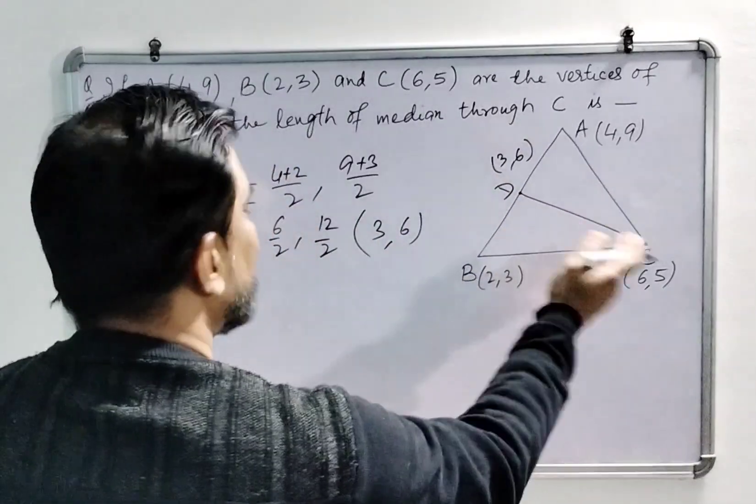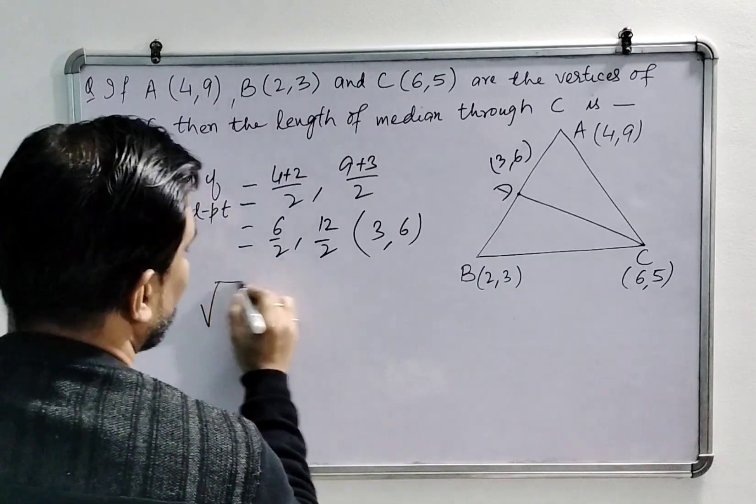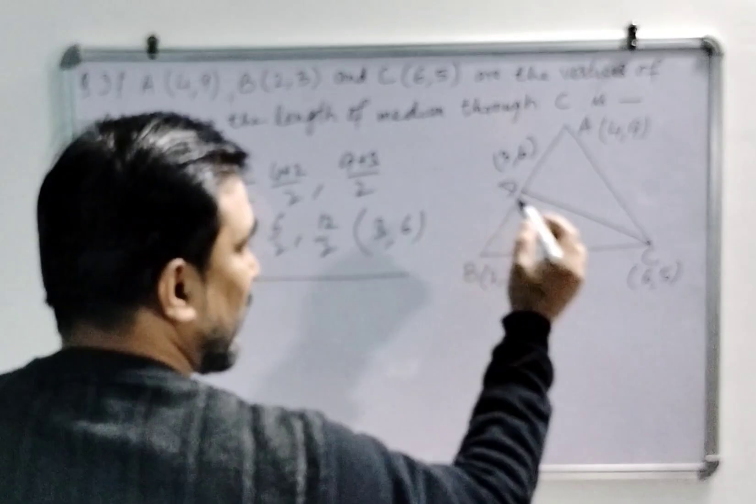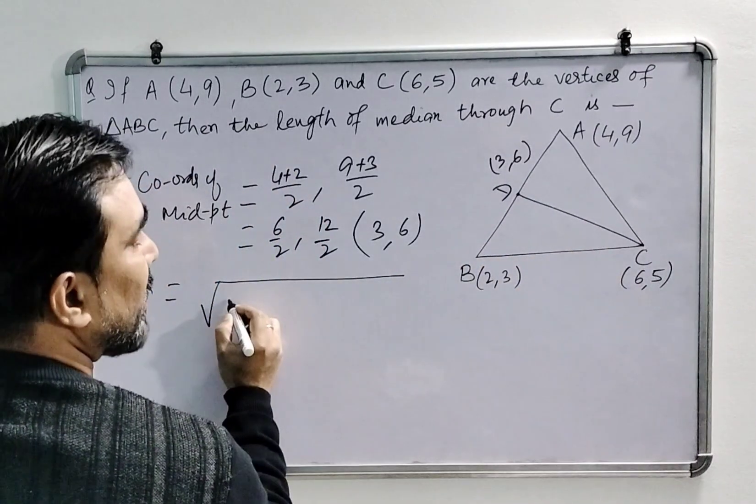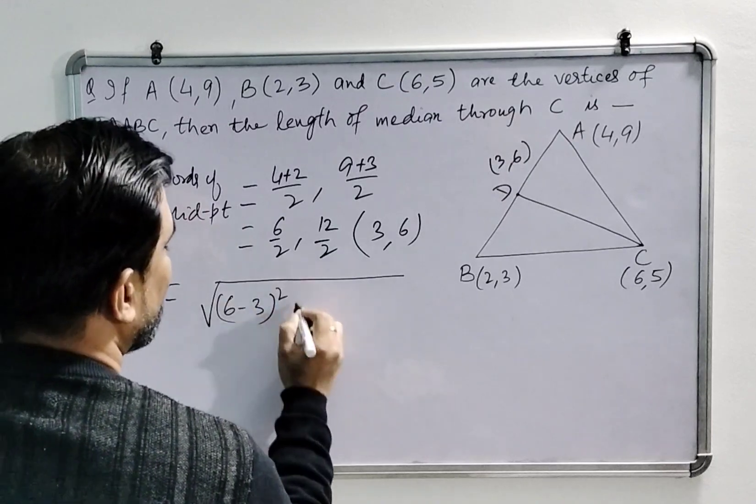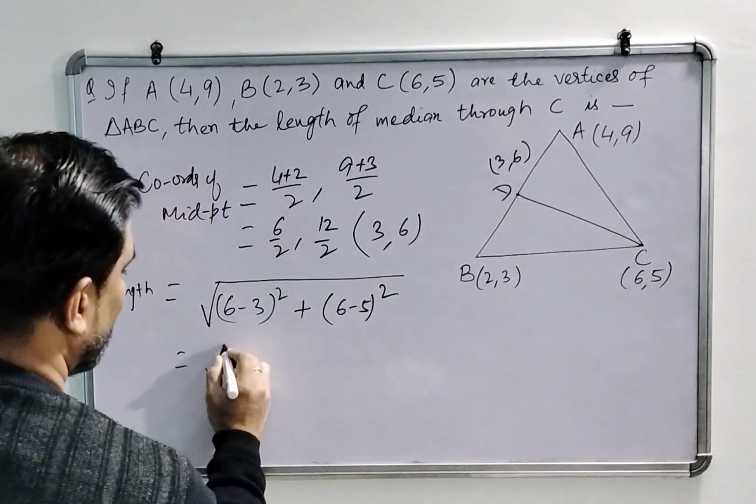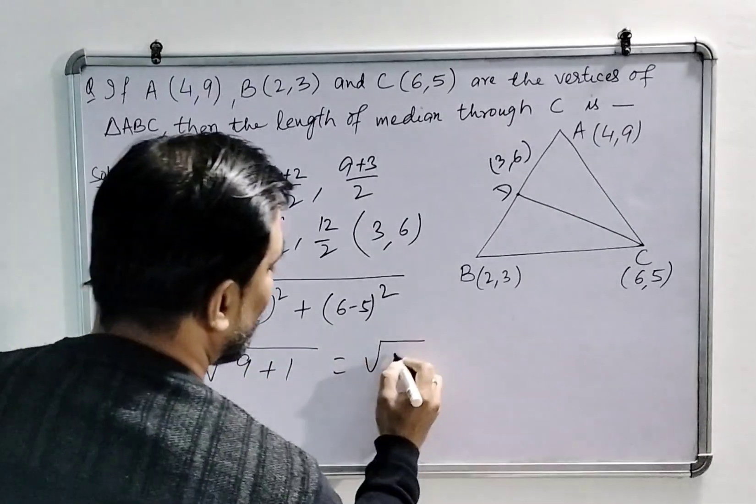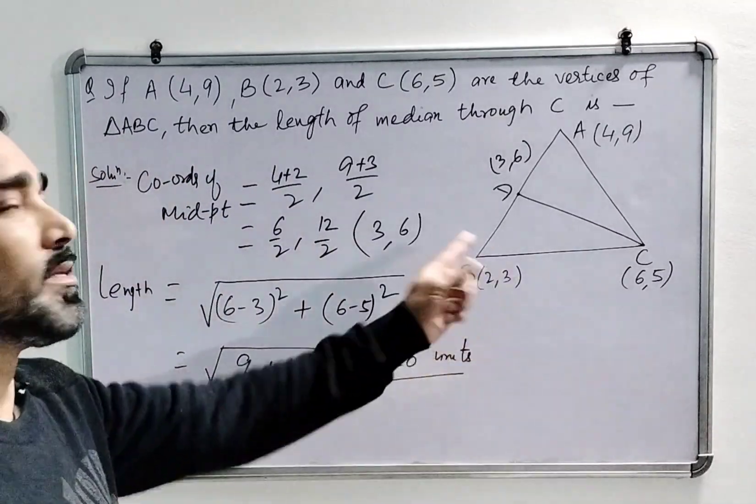Now we can easily find the length of this median. That will be difference of x-coordinates square plus difference of y-coordinates square. So if you look here, 6 minus 3 square plus 6 minus 5 square whole under root. So the value is now 9 plus 1, that is under root 10 units is the length of this median CD.